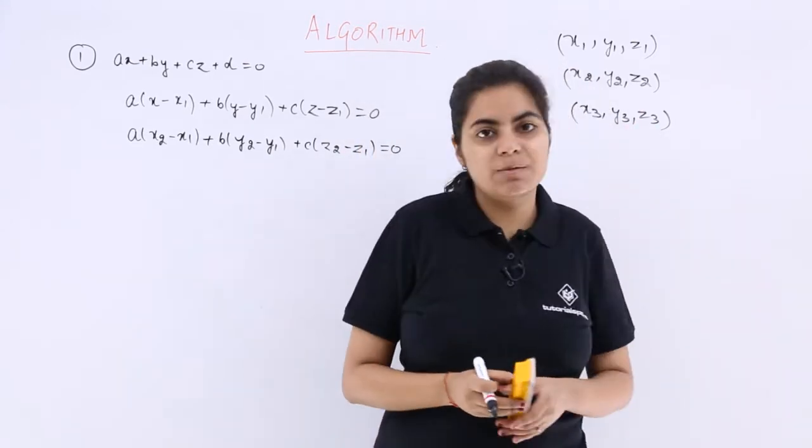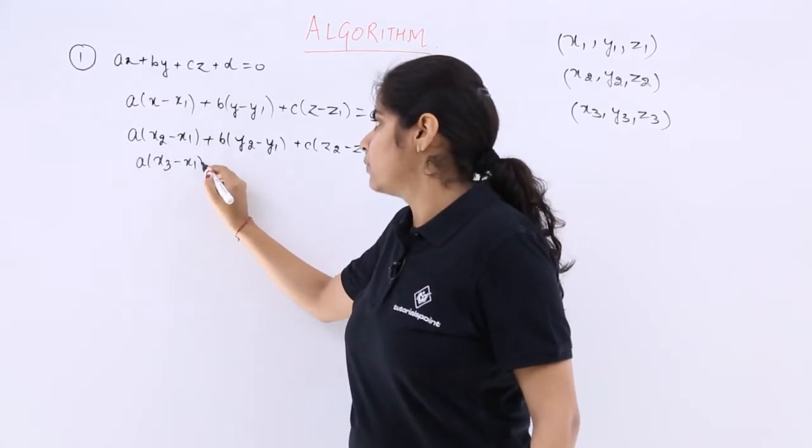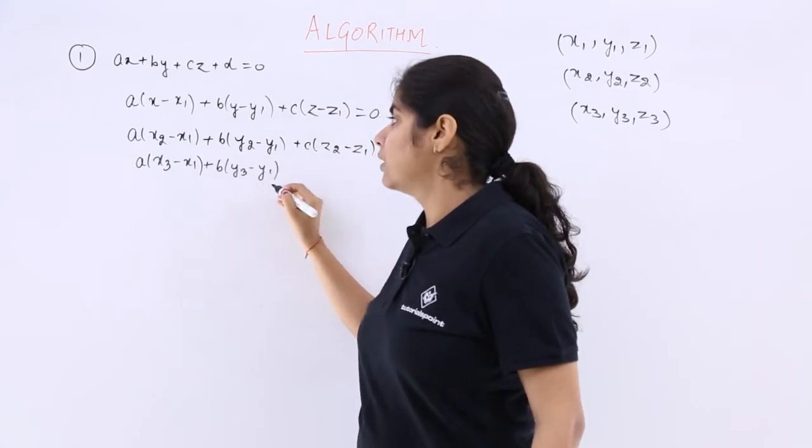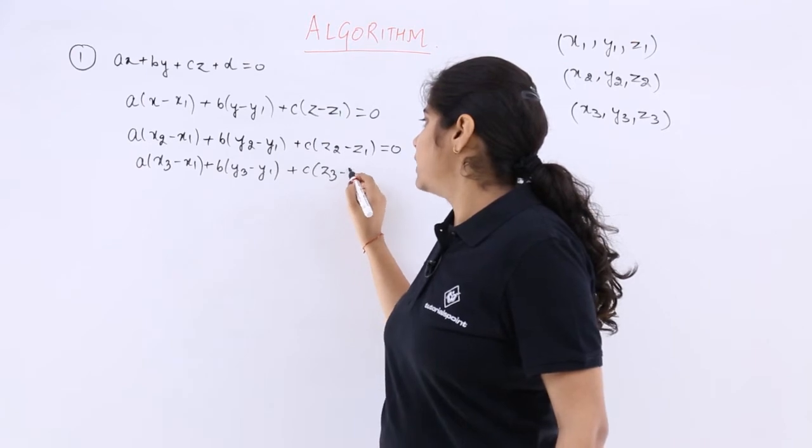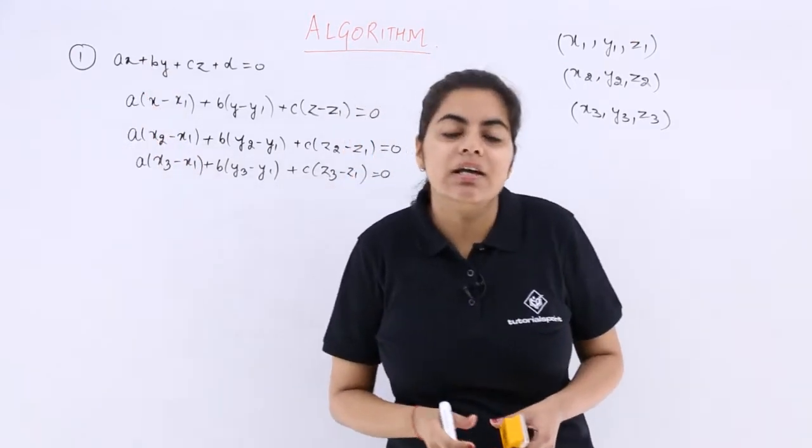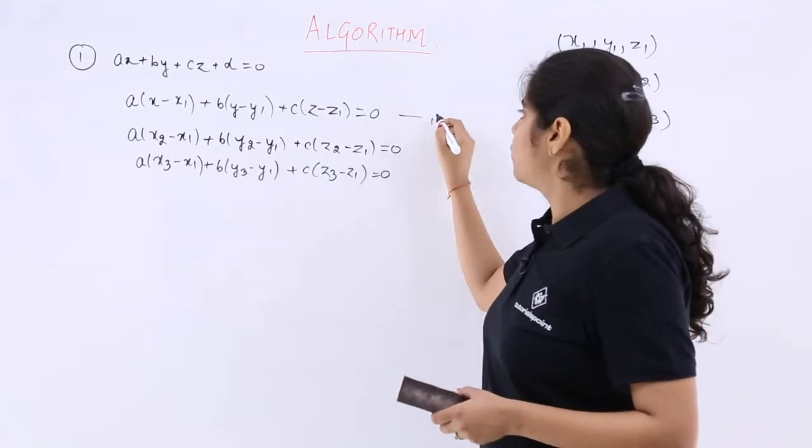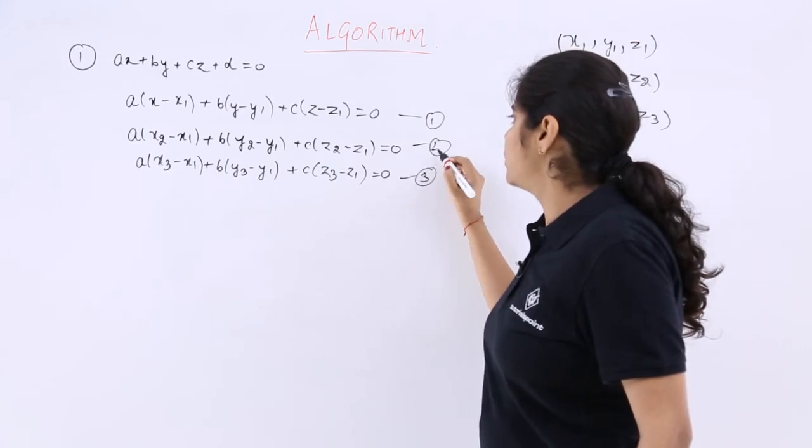Similarly, the third point is being satisfied. So it is A into x3 minus x1 plus B into y3 minus y1 plus C into z3 minus z1 is equal to 0. So these are the rest of the equations that we have formed. Now what we are going to do is we are going to name these equations as 1, equation number 2 as equation number 3 also.